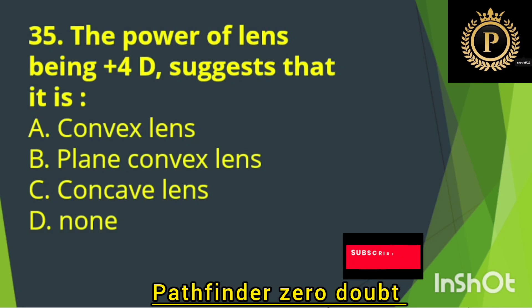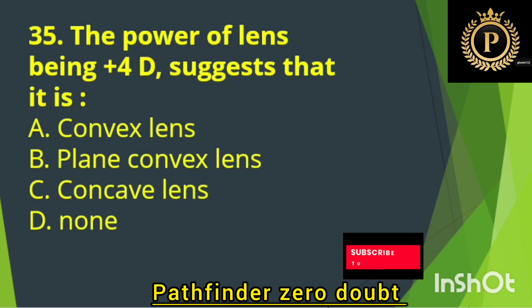The power of a lens being 4 diopters suggests that it is — Option A: A convex lens.